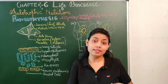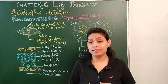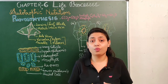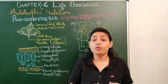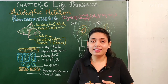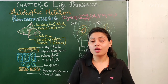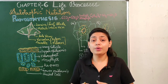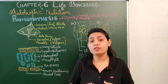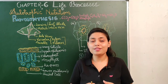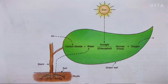Now, what is photosynthesis? The word photosynthesis can be separated to form two smaller words: photo means light, and synthesis means to produce. When green plants produce their food in the presence of sunlight, the process is known as photosynthesis.